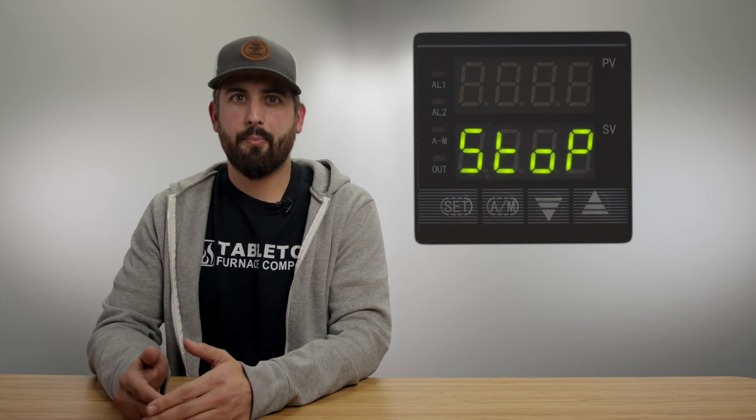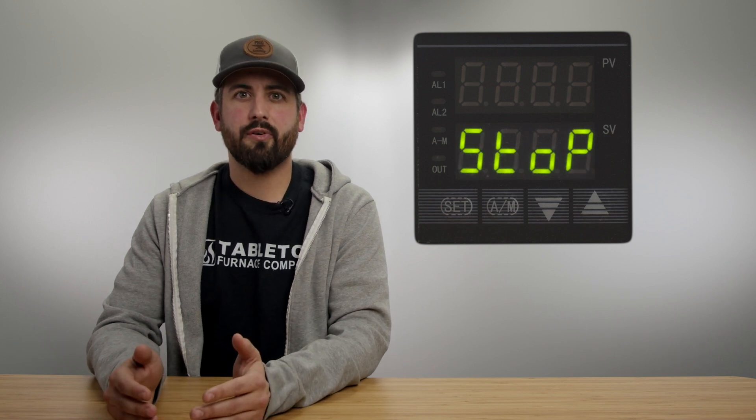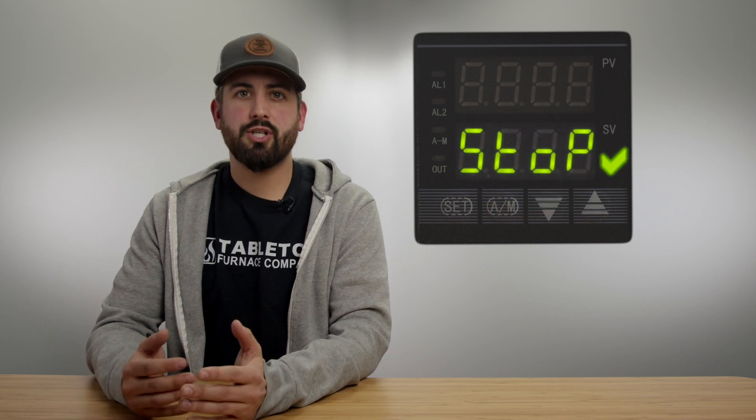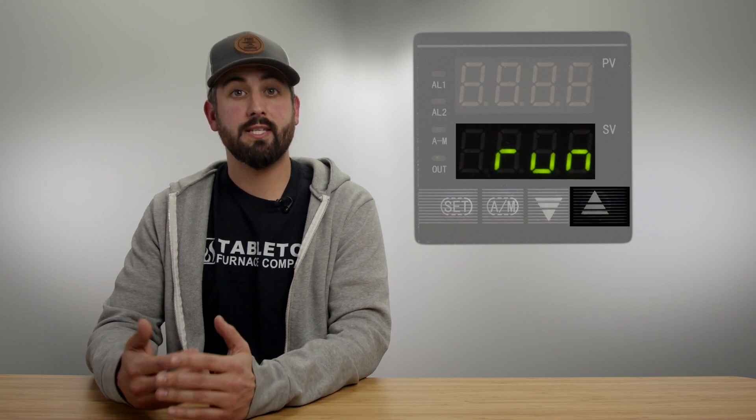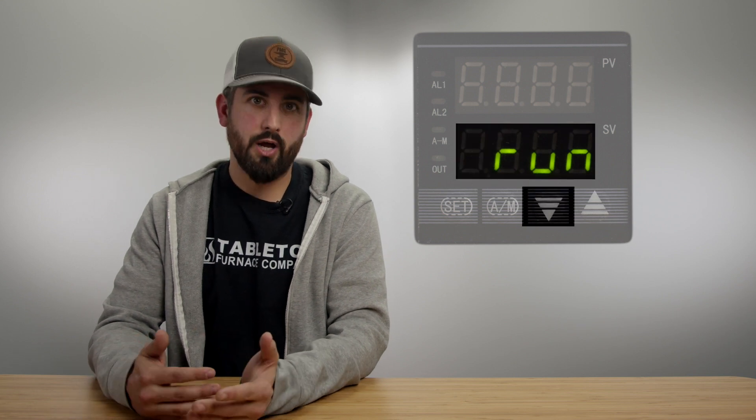Your furnace has three modes: run, hold, and stop. It's very rare that you'll ever need to put the furnace into hold mode but we are going to cycle through run and stop pretty consistently. You're going to change these modes by holding the up or down arrows. If you're in run you're going to hold the up arrow until you see stop. If you're in stop mode you're going to hold the down arrow until you see run.